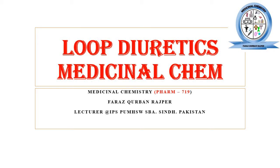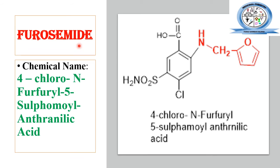In this video lecture I will discuss the basic chemical structure of these diuretics, their structure-activity relationship, and the chemical synthesis of furosemide. Furosemide is one of the well-known examples of loop diuretics. Its chemical name is 4-chloro-N-furfuryl-5-sulfamoyl anthranilic acid. You may observe that we have chlorine at the fourth position, the furfuryl heterocyclic ring at the second position, and the sulfamoyl group at the fifth position.